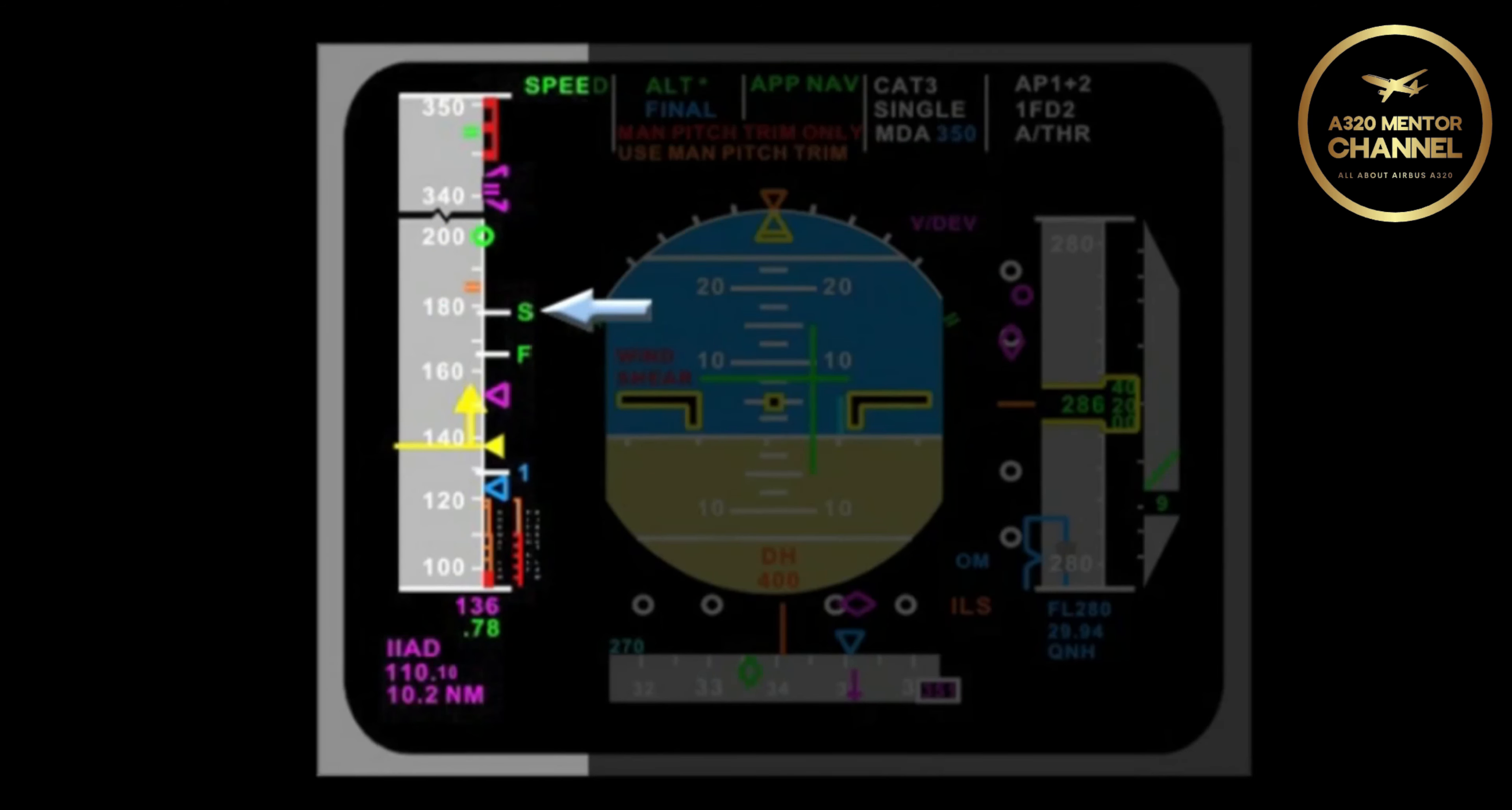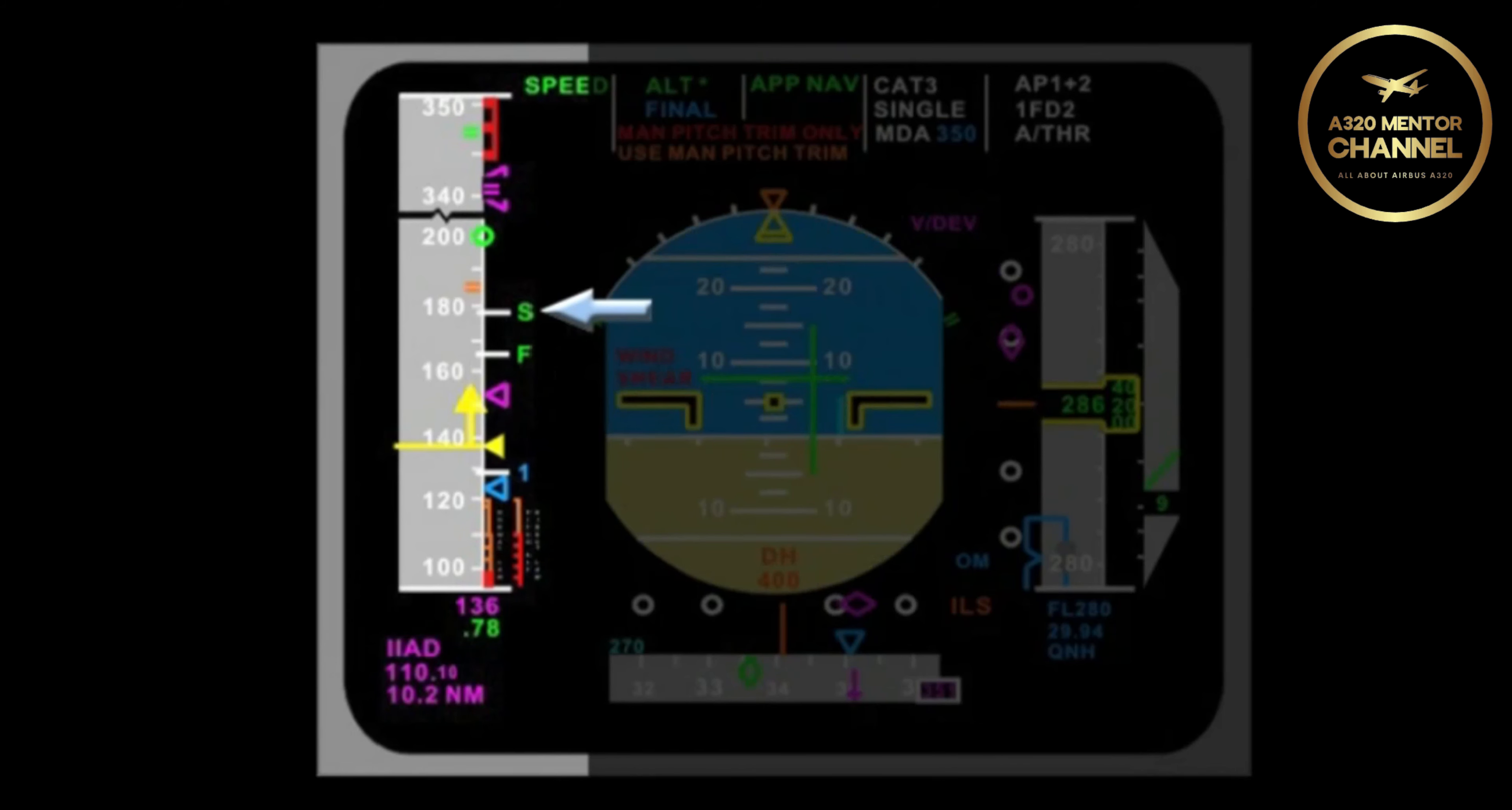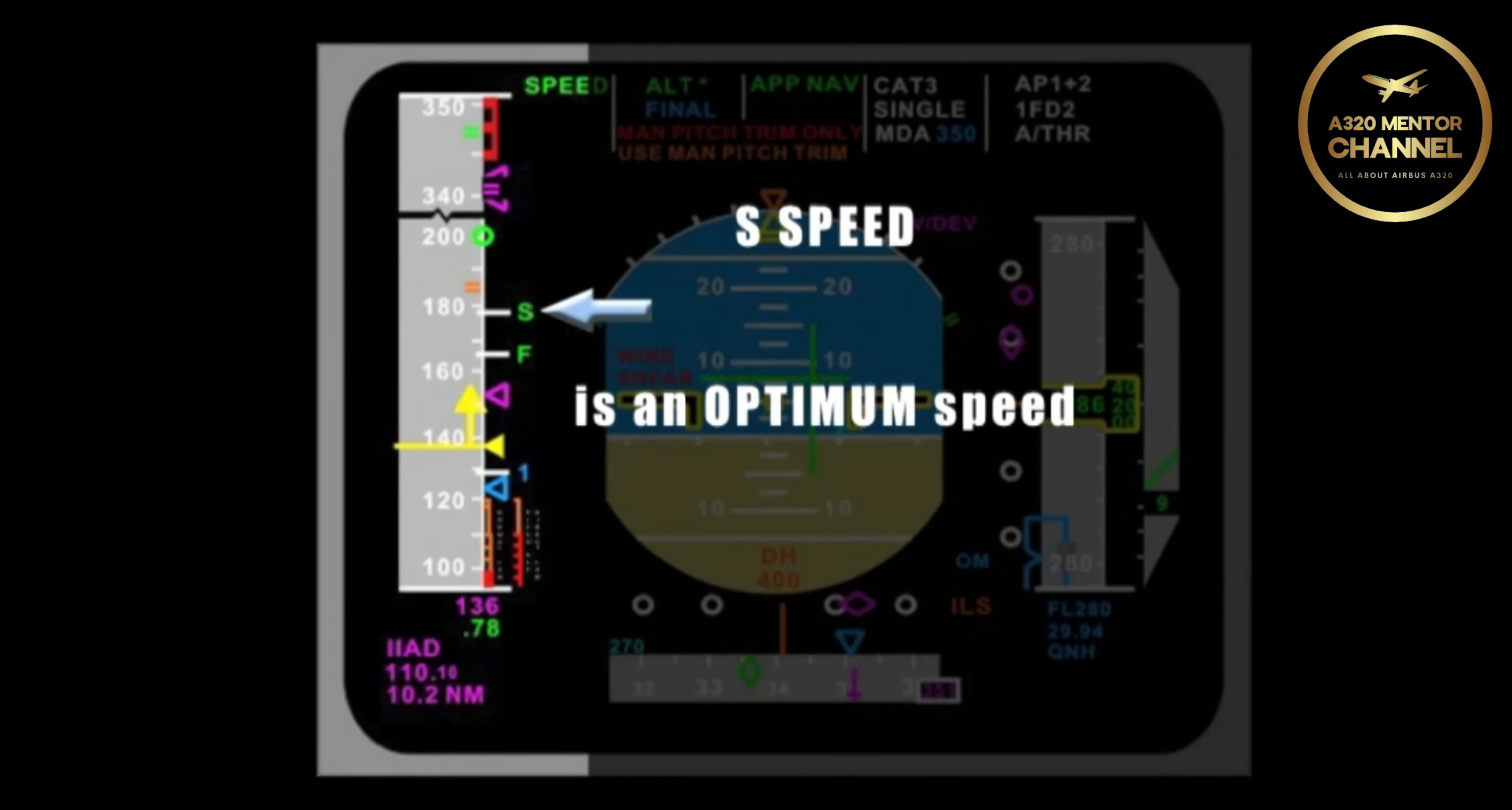What does that S represent? During the takeoff phase, that is the minimum slat retraction speed. As the aircraft accelerates through S speed, I can retract the flaps from position 1 to up. However, S is also used during the approach phase of flight. If the approach phase of flight has been activated, and I am in auto flight, then the aircraft will slow and maintain S speed. S speed is an optimum speed to be flying and is not the minimum speed. The minimum speed, of course, is VLS.